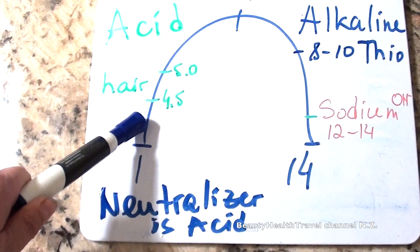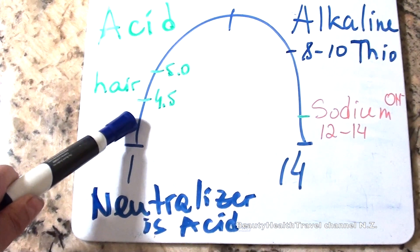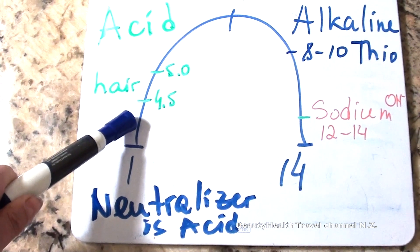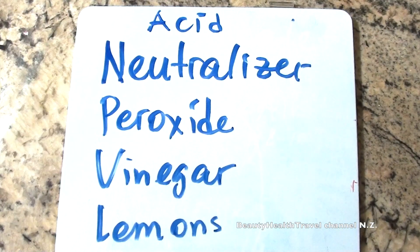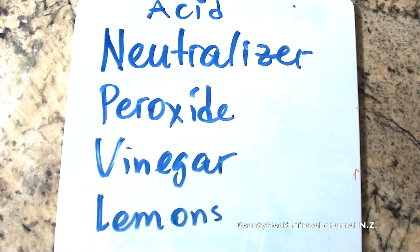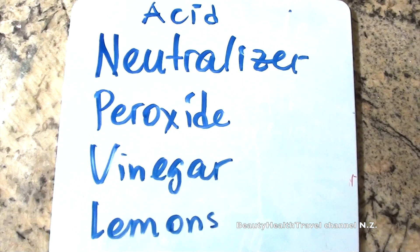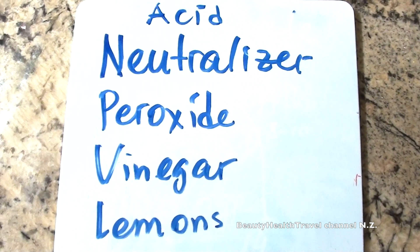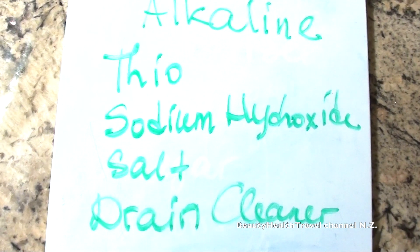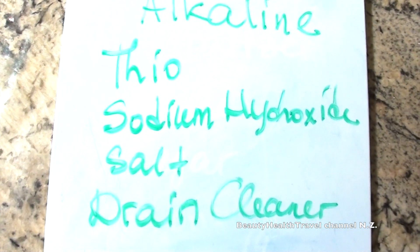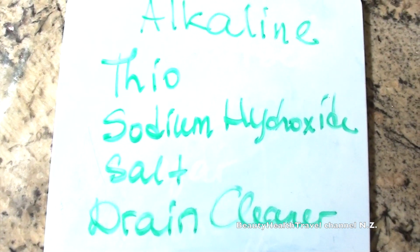It's lemon and also vinegar. They're highly acid. Also hydrogen peroxide, it is an acid. So neutralizer, peroxide, vinegar, lemons are acid. So is the hair, also the skin. To understand the alkaline: ammonium thioglycolate, sodium hydroxide, salt, and drain cleaner. Those are all alkaline examples.